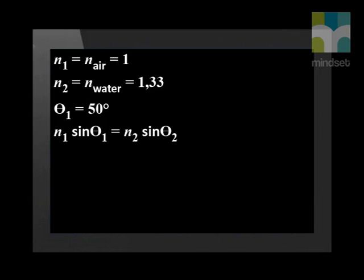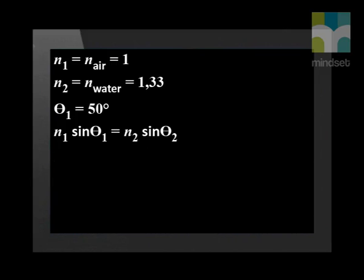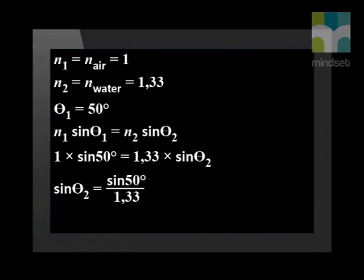Now let us write down Snell's Law. N1 times sin theta 1 equals N2 times sin theta 2. Now if we substitute into the equation, we get 1 times sin 50 which equals 1.33 times sin theta 2. If we simplify, we can see that sin theta 2 equals sin 50 degrees divided by 1.33. Therefore the angle of refraction, theta 2, equals 35.17 degrees. The light enters the water with an angle of refraction of 35.17 degrees.